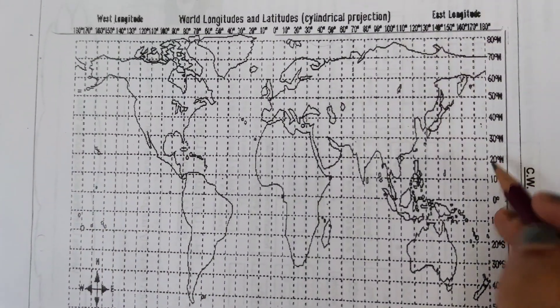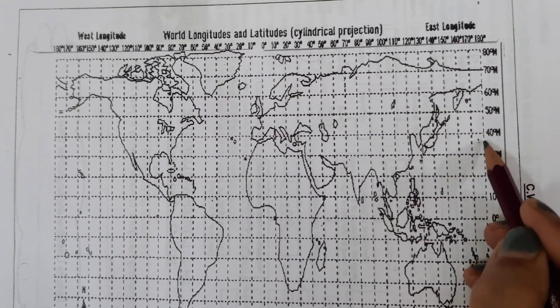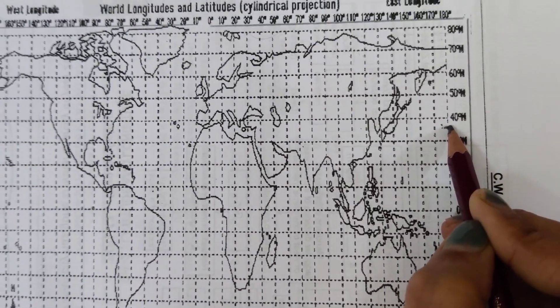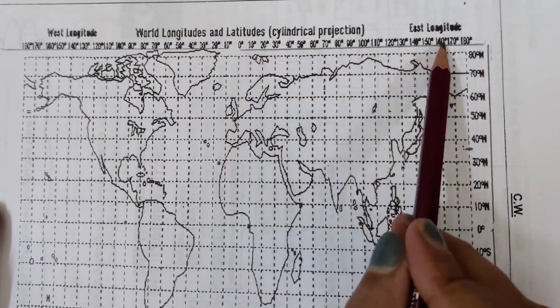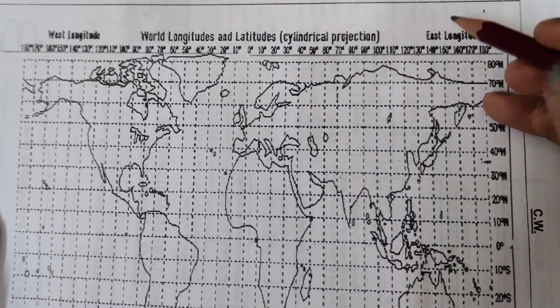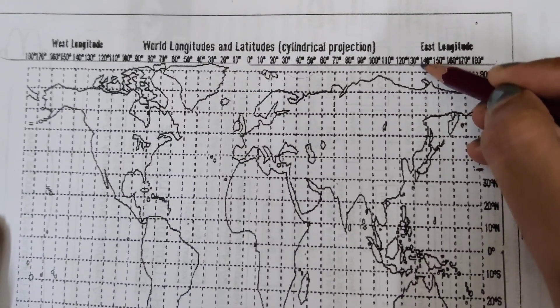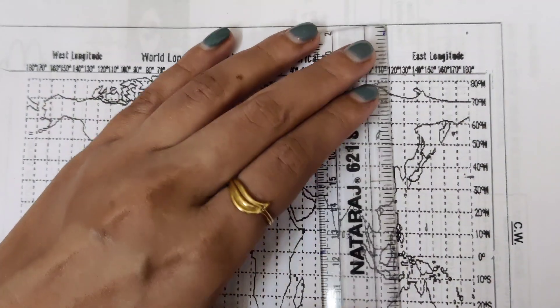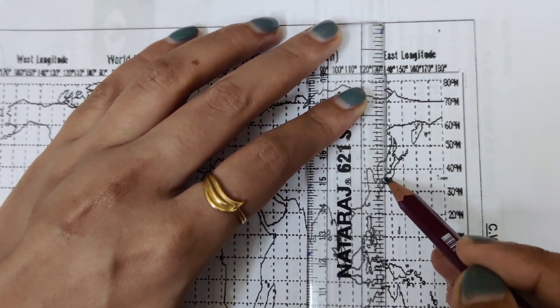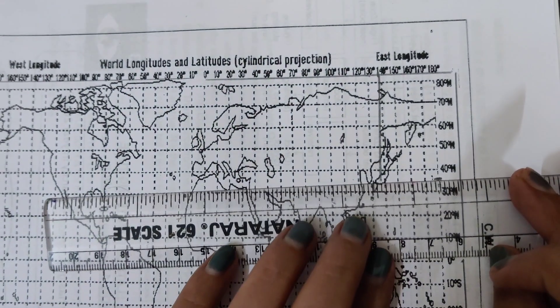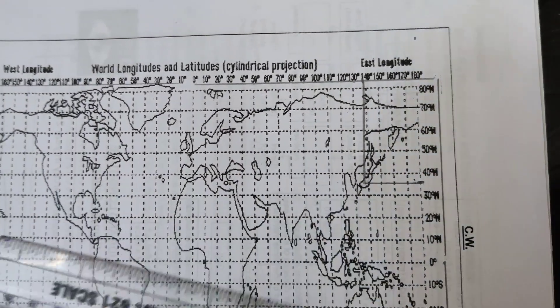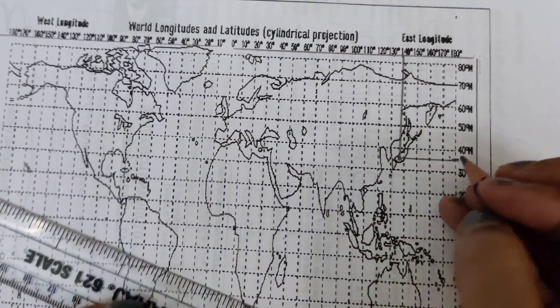Let's see where 35 degrees north is. Between 30 to 40, you can mark it here at 35. The next is 139 degrees east. This part is east, so 120, 130, and we need 139, just before 140. Now draw the lines, and the place where they intersect is Tokyo.